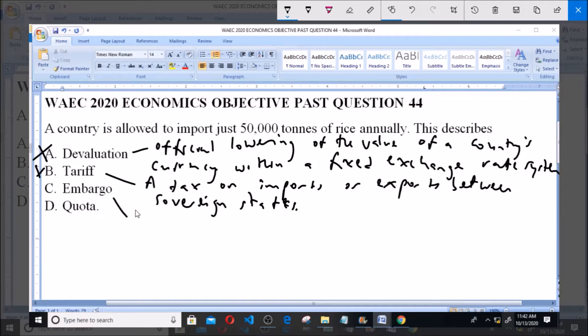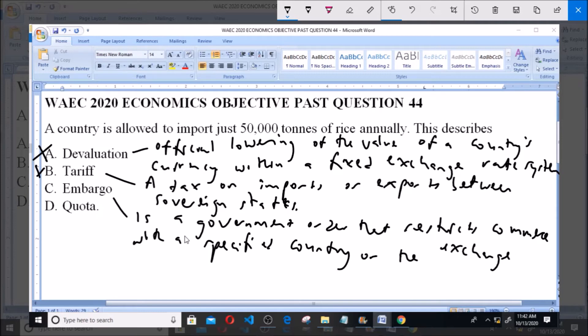Now option C, embargo. An embargo is a government order that restricts commerce with a specified country or the exchange of specific goods.